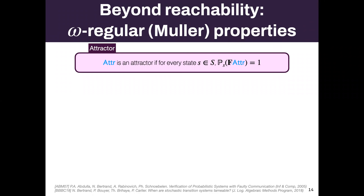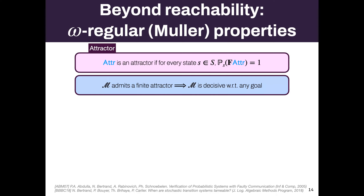The approach is based on something called an attractor. In a Markov chain, an attractor is a set of states that you can reach from everywhere with probability one. For instance, a finite Markov chain always has a finite attractor — just take all its states, though that's not very interesting. But if a Markov chain is denumerable and admits a finite attractor, you can show that it's decisive. That is a way to prove decisiveness.